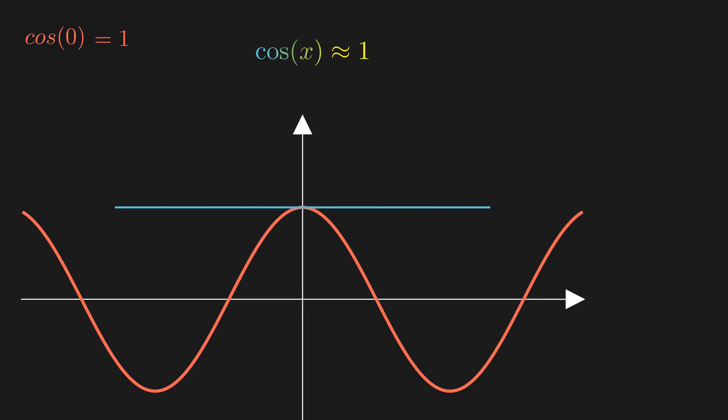Then to represent the first derivative, we added a term containing x, but to cancel out the effect of taking derivatives, we divide it by the factorial of the exponent. The first derivative of cosine is negative sine, which equals 0 at x equals 0. Therefore, we also want that term in our polynomial to be 0.